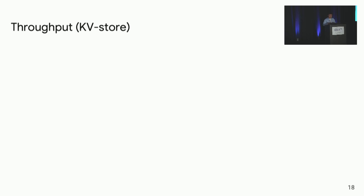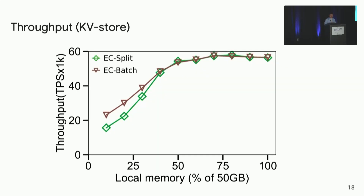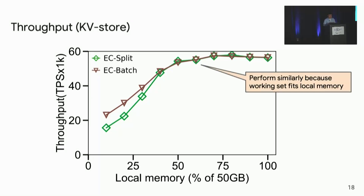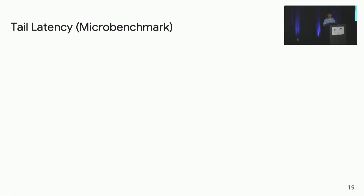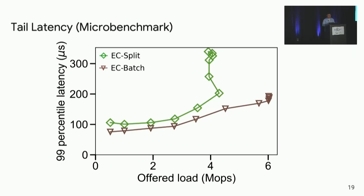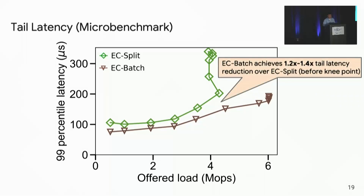We first look at the throughput of a transactional key-value store. The X-axis shows the size of local memory and the Y-axis shows transaction throughput of EC Split versus our EC Batch, both under the span-centric design. Both schemes' throughputs increase as local memory increases. With higher local memory, the two perform similarly because the workload mostly fits into local memory. But with smaller local memory, our EC Batch achieves up to 1.5x speedup over EC Split, mostly due to fewer I/O operations per swap. We also look at swapping tail latency — EC Batch achieves 1.2x to 1.4x tail latency reduction over EC Split, because EC Batch only needs a single I/O operation per data fetch.